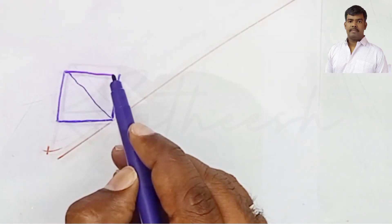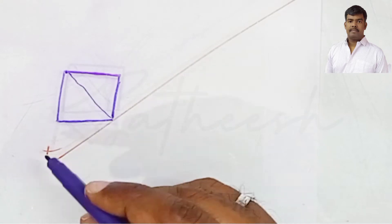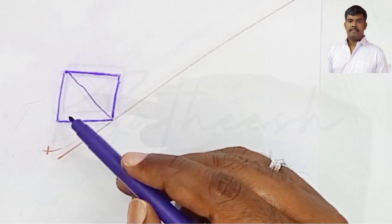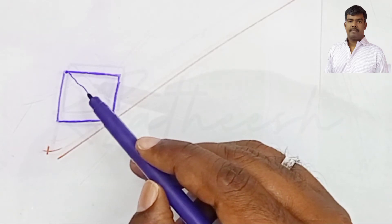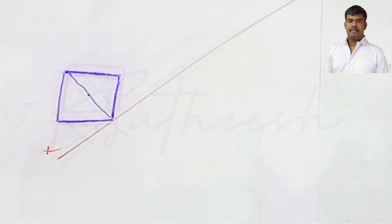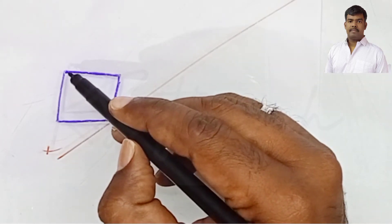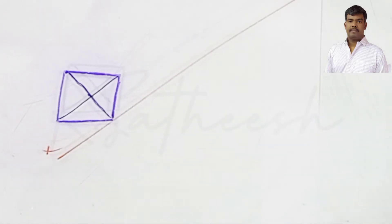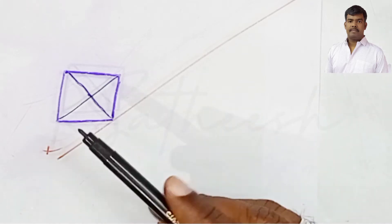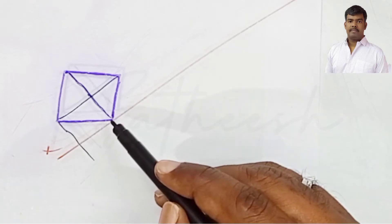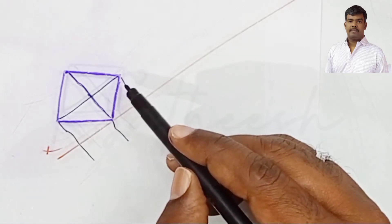This is the front view of the square prism. For any solid, we need to find the center — the line joining the diagonals. Draw the projection lines from this front view. The distance in front is not given, so we consider some x distance in front of it.